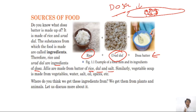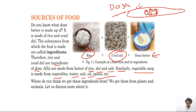Vegetable soup is made from vegetables, water, salt, oil, and spices — those are the ingredients for vegetable soup. Where do we get these ingredients from? Where do we get rice? Where do we get urad dal? Let's read ahead in the textbook to find out.